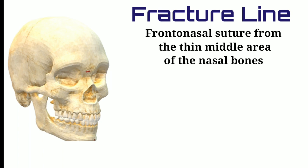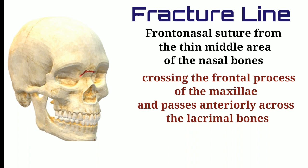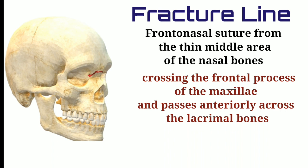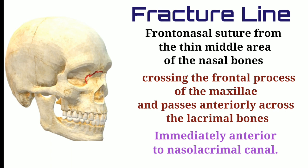The fracture line starts just below the frontonasal suture, and from this point it goes laterally towards the orbit. It goes down to involve the frontal process of the maxilla and some part of the lacrimal bone, then continues downward and comes back in the anterior direction just anterior to the nasolacrimal duct.